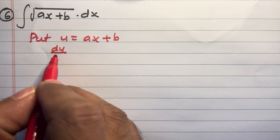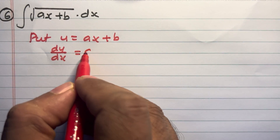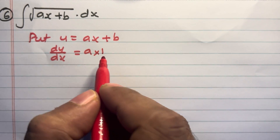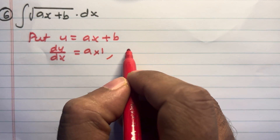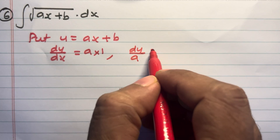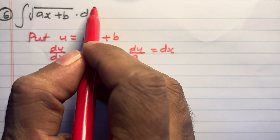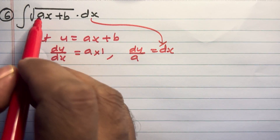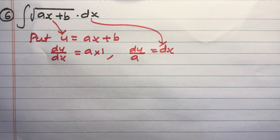du divided by dx is equal to a, since the derivative of x is 1. So du divided by a is equal to dx. Substitute dx as du by a, and ax plus b as u.